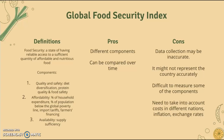The Global Food Security Index: the definition of food security itself is a state of having reliable access to a sufficient quantity of affordable and nutritious food. The components it takes into account are the quality and safety of the food — that means diet diversification, protein quality, and food safety — affordability (the percentage of household expenditure on food, the percentage of population below the global poverty line, import tariffs, and farmers' financing), and finally availability, meaning the supply sufficiency of the food.